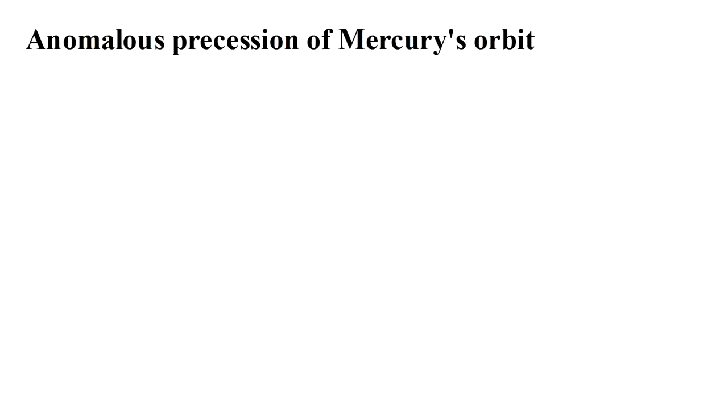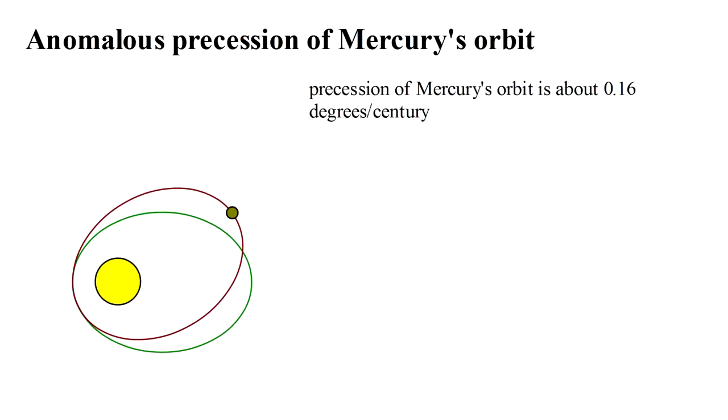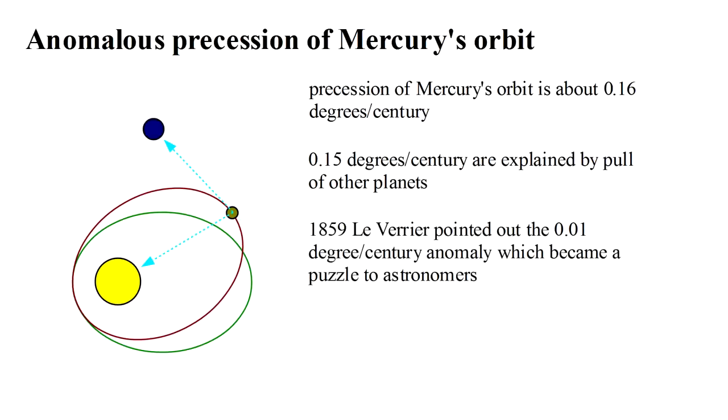Mercury is the planet closest to our sun. Its orbit has long been known to precess at about sixteen hundredths of a degree per century. Of this, fifteen hundredths of a degree per century can be explained by the gravitational pull of the other planets. But as early as 1859, it was recognized that this left one hundredth of a degree per century unaccounted for. One hundredth of a degree per century is an incredibly small value, but astronomical observations are so precise that this is much larger than the observational uncertainty.